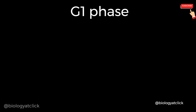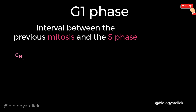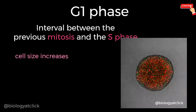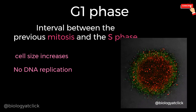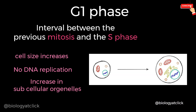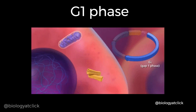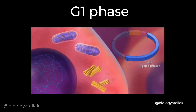G1 or Growth 1 phase corresponds to the interval between mitosis and initiation of DNA replication. During G1 phase, the cell is metabolically active and continuously grows in size but does not replicate its DNA. The cell increases subcellular structures such as mitochondria, centrioles and ribosomes in number. Centriole pairs slightly move apart during G1 phase.